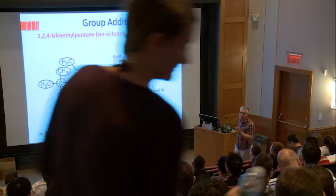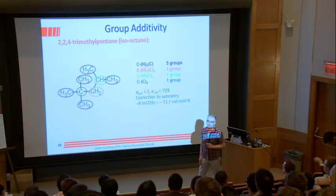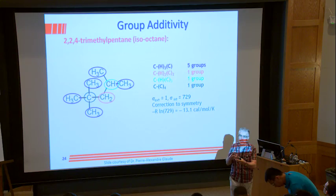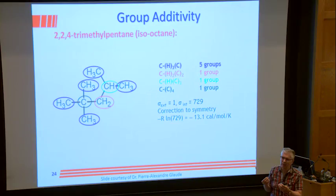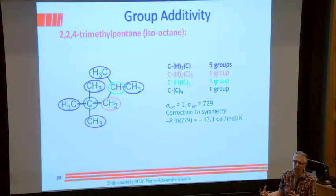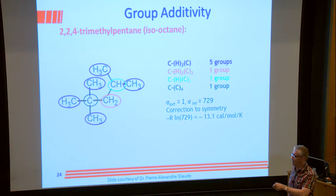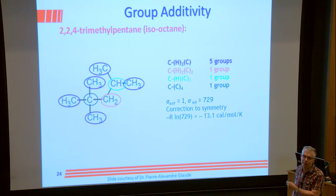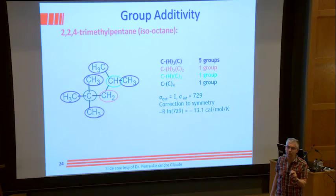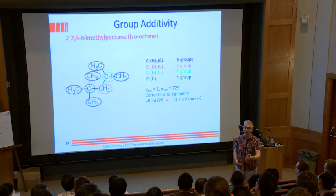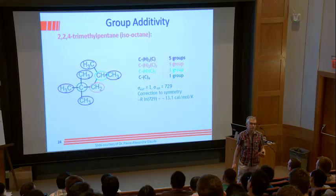When you abstract a hydrogen atom and create the radical, the structure relaxes and you get a two-fold symmetry — it's no longer tetrahedral, it's trigonal planar, SP2 hybridized. So when you have a tertiary carbon and abstract the tertiary hydrogen, you add a two-fold symmetry for the radical relative to the parent. It does increase the symmetry.